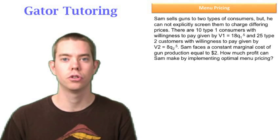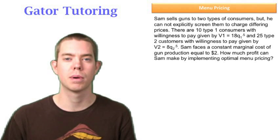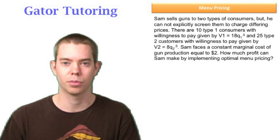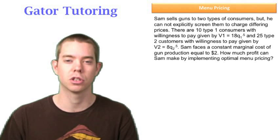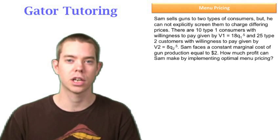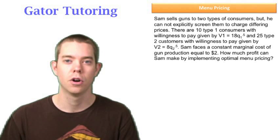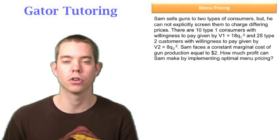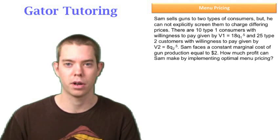Sam sells guns to two types of consumers, but he cannot explicitly screen them to charge different prices. Remember that if we could explicitly screen them, we would be engaging in price discrimination. That was when we had senior citizens and young kids coming to the movie theater and we literally checked their ID and charged them different prices. Now we just know there's two types of customers: one that really likes our product and one that kind of likes our product.